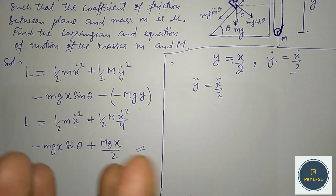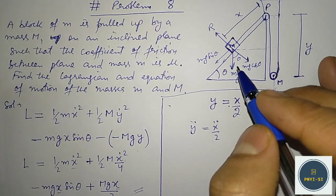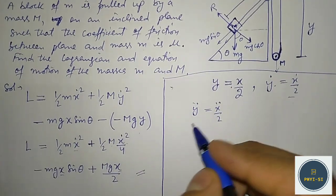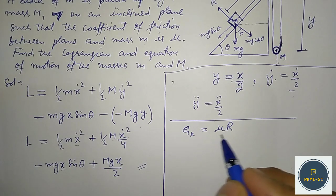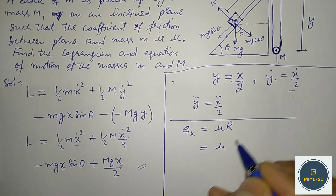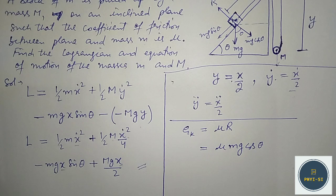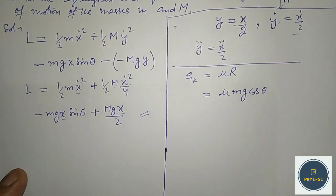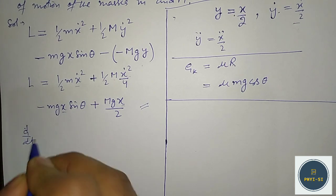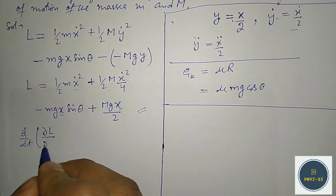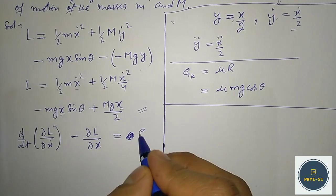Now we will find the equation of motion. Remember, in this particular problem we also have to find the generalized force. The generalized force is the frictional force, which equals mu times the normal reaction R. We can write it as mu times mg cos theta. The Lagrangian equation is: d/dt (∂L/∂x-dot) − ∂L/∂x = Qk, where Qk is the generalized force.